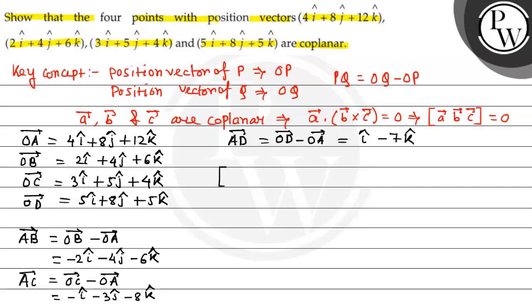Now we find out the value of the box product [AB, AC, AD]. We'll write this in determinant form. That is: (-2, -4, -6), (-1, -3, -8), (1, 0, -7).